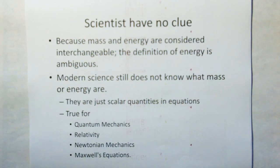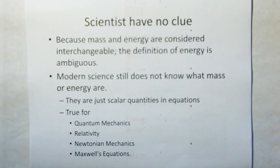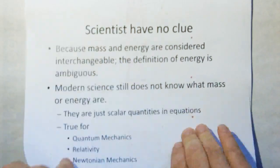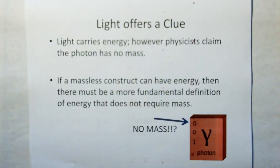Because mass and energy are considered interchangeable, the definition of energy is ambiguous. And modern science does not know what mass or energy are. They're just scalar quantities in equations. It's all they're treated as, is scalar quantities. And this is true for quantum mechanics, relativity, Newtonian mechanics, and Maxwell's equations.